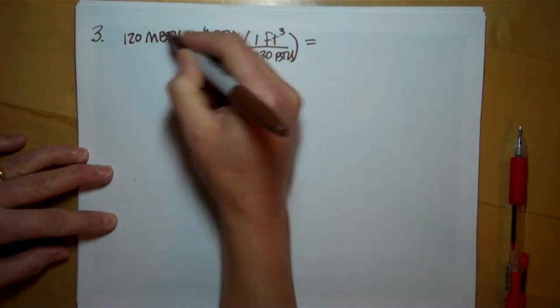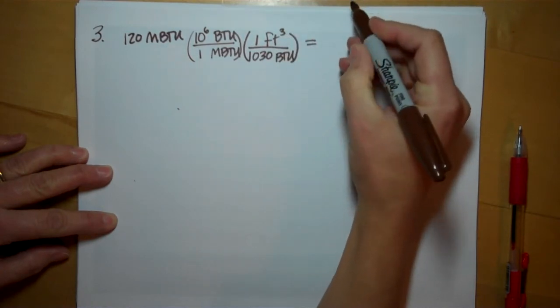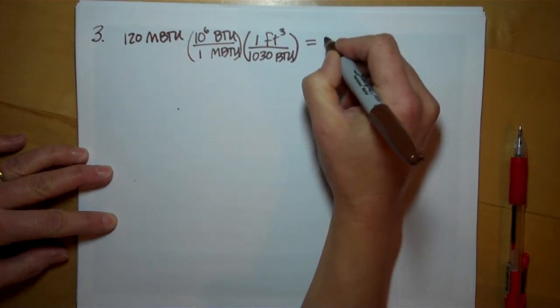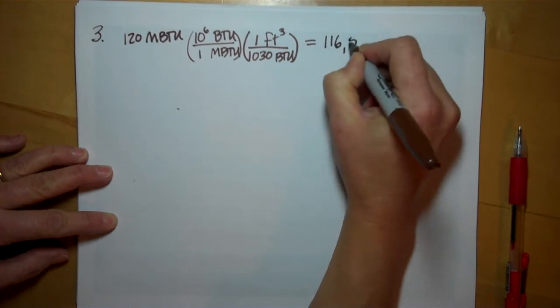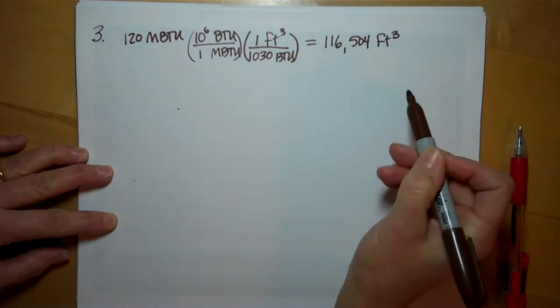So multiplying this out, divide by 1030, we get to 116,504 cubic feet of natural gas.